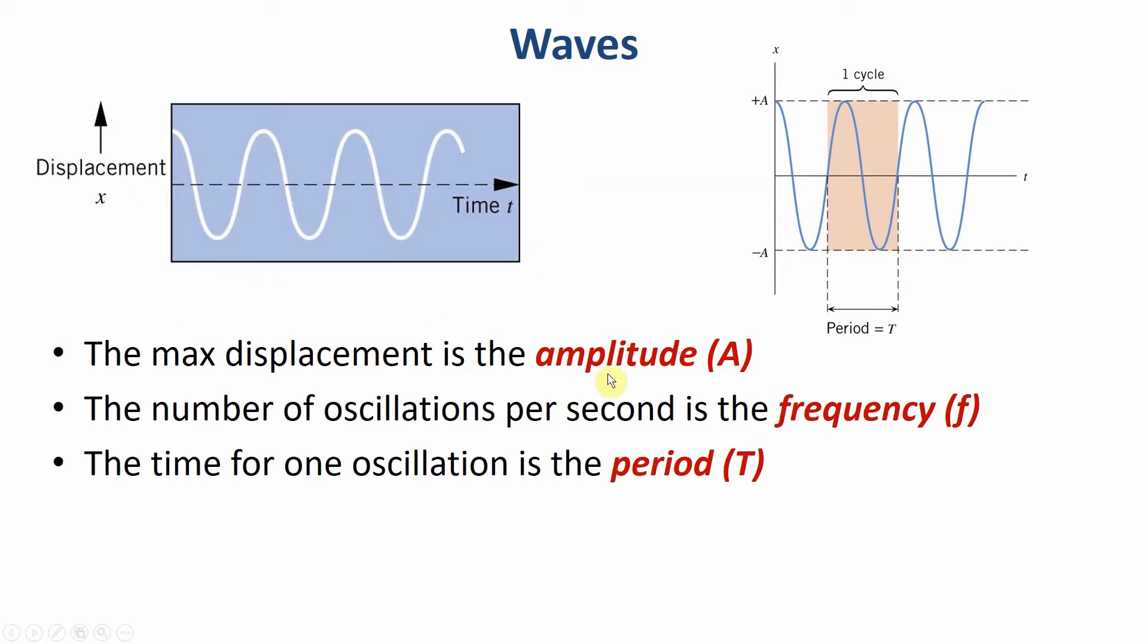The maximum displacement is called the amplitude. If this is my x equals zero, the amplitude is how far out do I swing in the positive or negative directions. Notice the amplitude isn't the maximum positive or the maximum negative, that's twice the amplitude. Amplitude is from the x equals zero resting point to one end or the other.